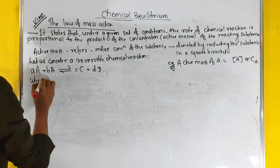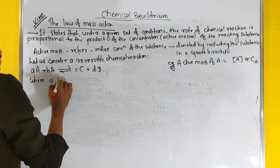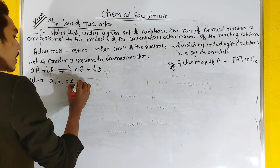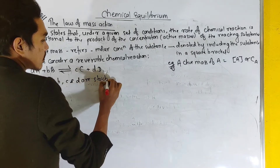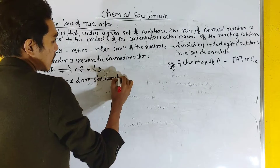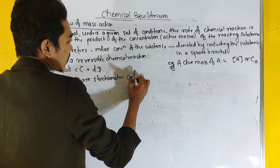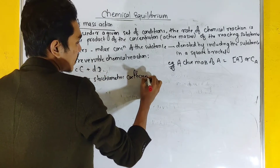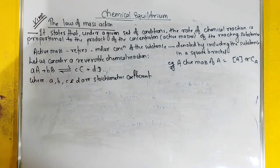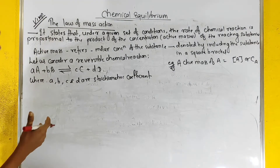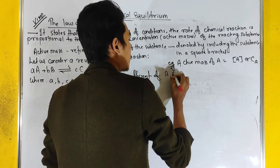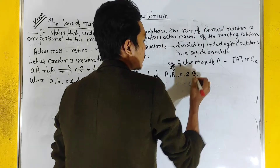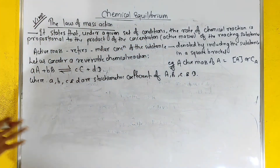Where A, B, C, and D are stoichiometric coefficients. So, what are the stoichiometric coefficients of A, B, C, and D?